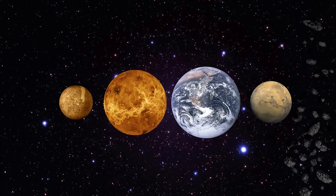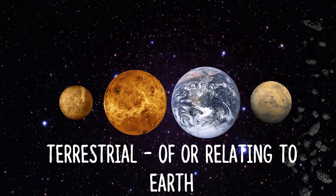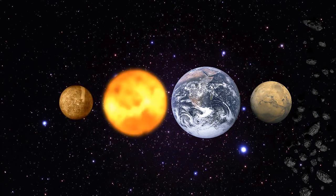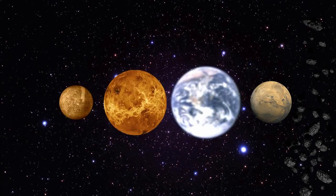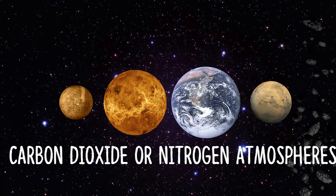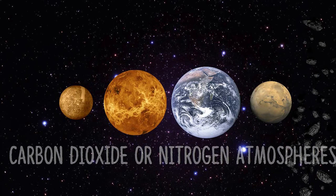Number 1. First are the terrestrial planets, also known as the inner planets. Terrestrial means of or relating to Earth. The terrestrial planets are Mercury, Venus, Earth, and Mars. Some characteristics of the terrestrial planets are that they are small, they have solid surfaces, they are rocky, and they have thin carbon dioxide or nitrogen atmospheres.